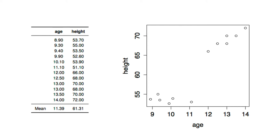Let us now turn our attention to the number of clusters we need to create. We have taken a very simple example in two dimensions, because it's easy to show the concepts geometrically. Consider the same data we've been considering thus far. If you plot a scatter plot of the data, you've got age on the x-axis and height on the y-axis, and you can see that some of the cases are sitting out in distinct areas.